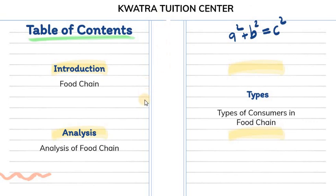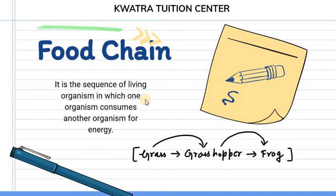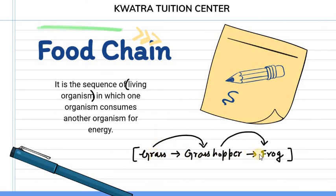Let's start with the first part — introduction to food chain. Food chain basically is the sequence of living organisms — only living organisms — in which one organism consumes another organism for energy. Energy के लिए एक दूसरे को जब हम consume करते हैं, उस process को हम food chain बोलते हैं। और अगर हमारा process एक ही direction में जा रहा है तो उसको हम unidirectional बोलते हैं।